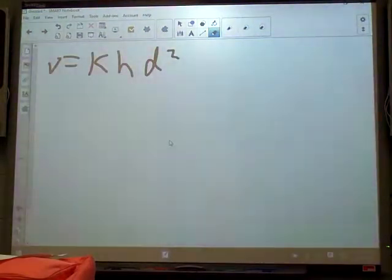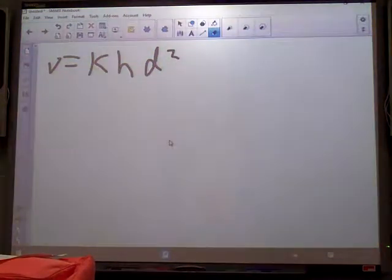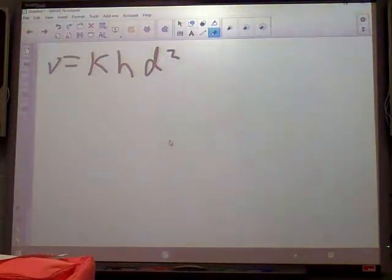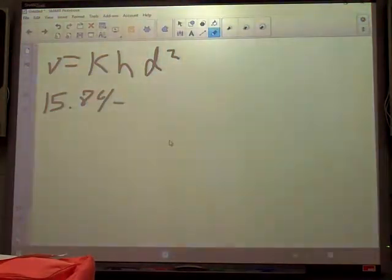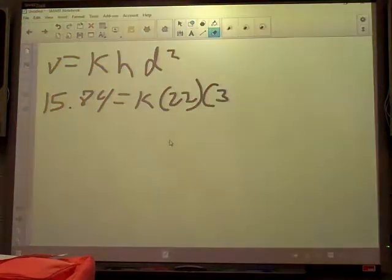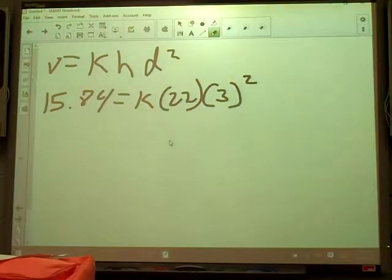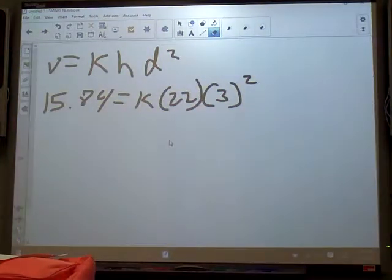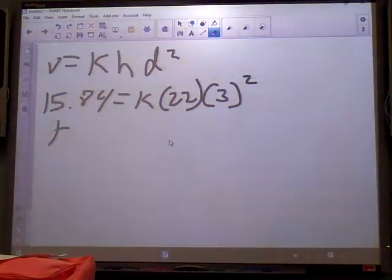Then it gives you some info to plug in. The volume of wood is 15.84 cubic feet, height is 22, and the distance is 3. So first thing I'm going to do is plug all that in to solve for K. So I've got my volume was 15.84. I don't know the K. It said the height was 22, and the distance was 3. So I do 22 times 9, because 3 squared is 9, and then whatever I get, I do 15.84 divided by that, and I ended up having a K that was 0.08.